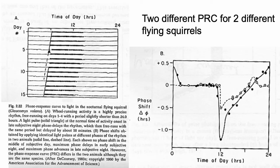And this is just another example here on the right. These are two different phase response curves for two different flying squirrels. So you can get quite a bit of variation within a species.